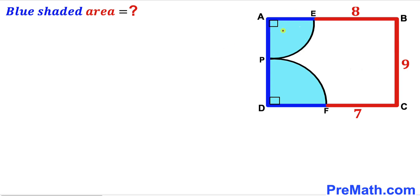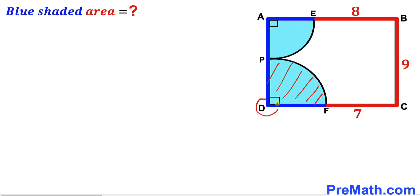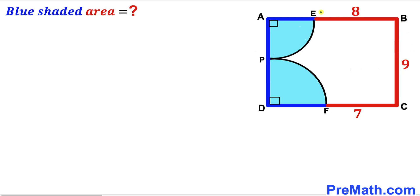Welcome to pre-math. In this video we have got two quarter circles of different dimensions: this quarter circle with center A, and this other quarter circle with center D. They are fully inscribed in a rectangle ABCD, such that side length BC is 9 units, horizontal segment EB is 8 units, and horizontal segment FC is 7 units.